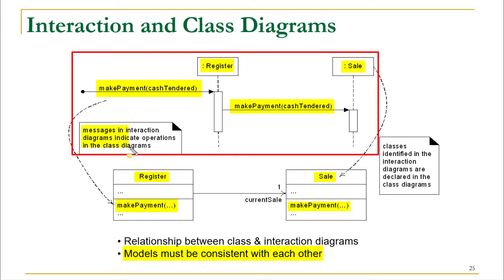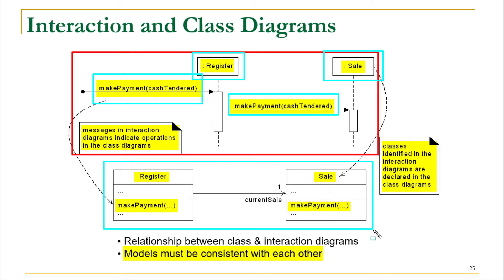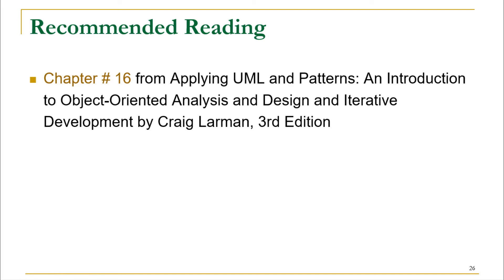Messages in interaction diagrams indicate operations in the class diagrams, and classes identified in interaction diagrams are declared in the class diagrams. We identified the Register class, the Sale class, and the makePayment method, and placed them in the class diagram as identified in the sequence diagram. For more understanding, you can read chapter 16 from Applying UML and Patterns. Good luck!